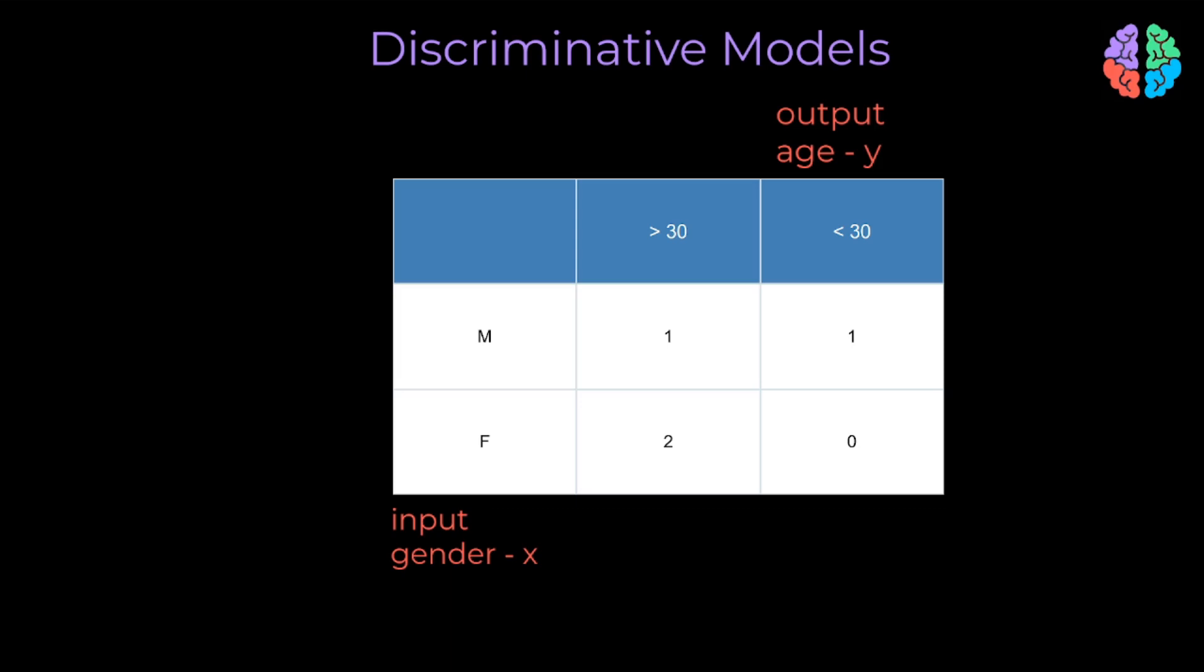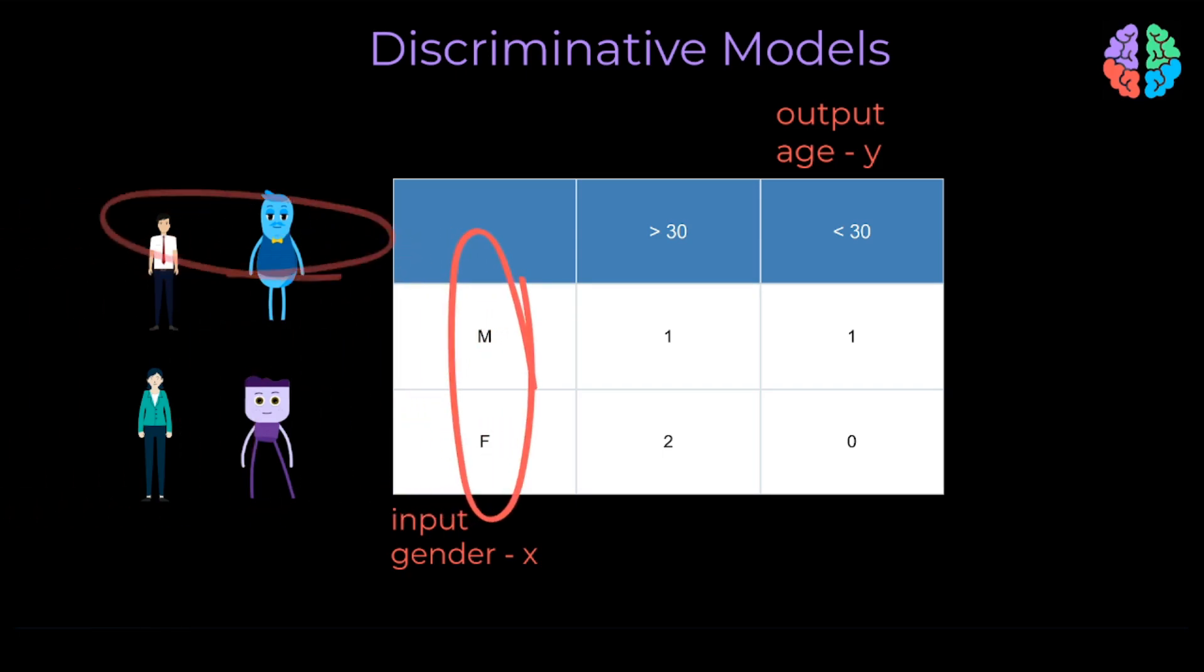One male aged more than 30, one male aged less than 30, and two females aged more than 30. Let's say we fit a toy model to this data where the input x to the model is the gender and the output y is the classification as to whether the person is less than or more than 30 years of age.